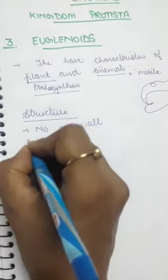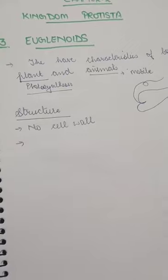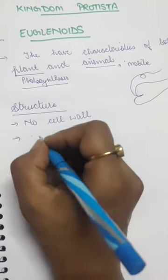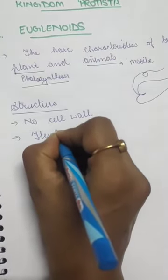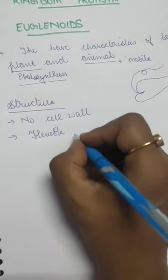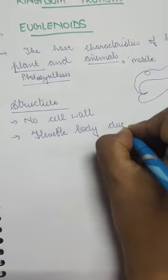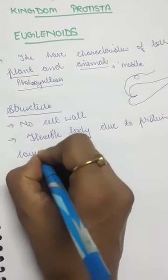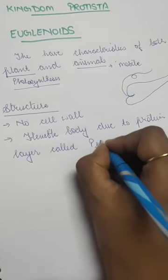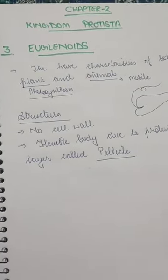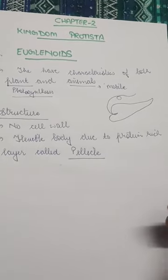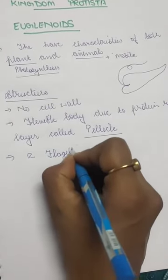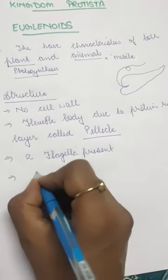Euglena also has a flexible body, and due to this flexible body they can keep moving. Their flexible body is due to a protein-rich layer called pellicle. They have two flagella — one small and one a little bigger. They also have chlorophyll in them.